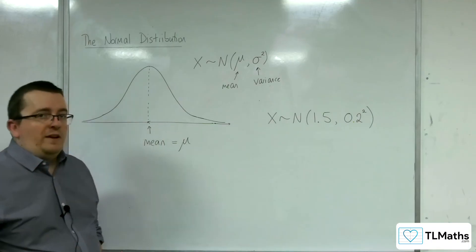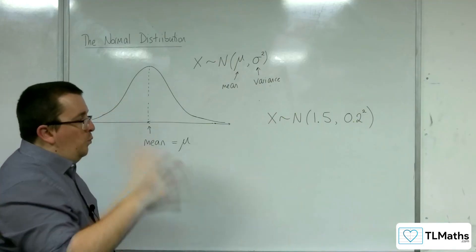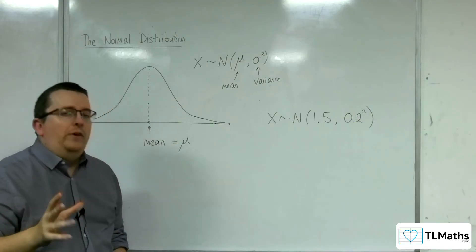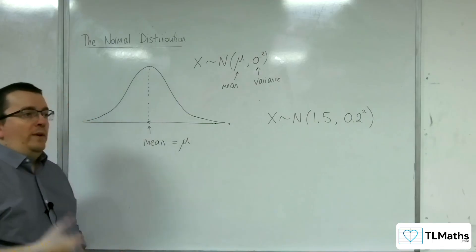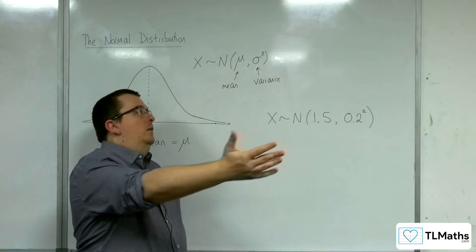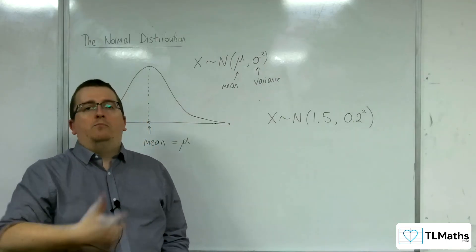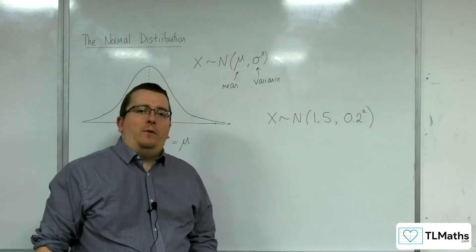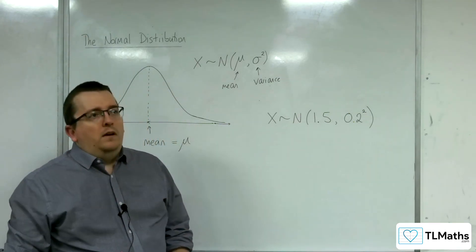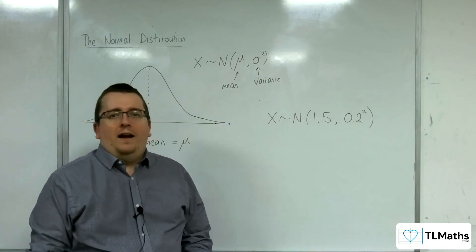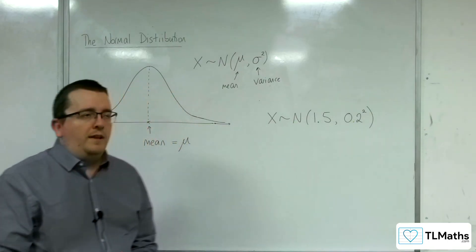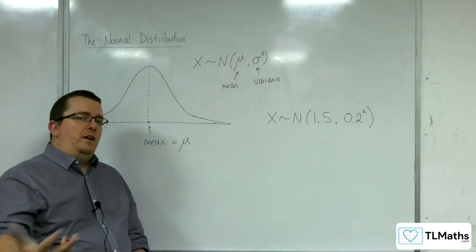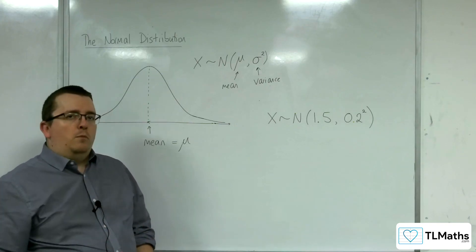The whole point of working with the normal distribution is to estimate how likely it is that we would meet a 17-year-old student who is 1.7 meters or higher, or what is the probability of selecting a sheep at random that weighs under 100 kilos, or under 50 kilos. You'll have questions that detail all these different scenarios. We're going to focus on getting the maths right first and then move into wordy problems.